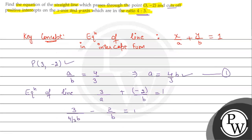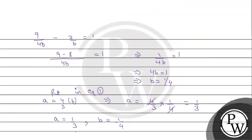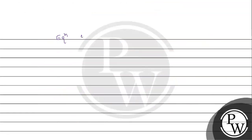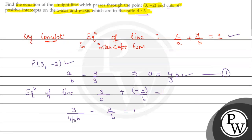Now we know the values of a and b. Putting them into the equation of line x/a + y/b = 1: x/(1/3) + y/(1/4) = 1, which becomes 3x + 4y = 1. So the equation of the straight line is 3x + 4y = 1. I hope you all understand it well. Best of luck.